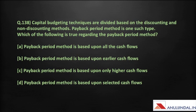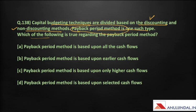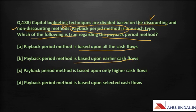Now this question relates to financial management. Capital budgeting techniques are divided into discounting and non-discounting methods. The discounting method considers the time value of money, while the non-discounting method does not. The payback period method is one such non-discounting method. Which of the following is true regarding the payback period method: it is based upon all cash flows, earlier cash flows, only higher cash flows, or selected cash flows?